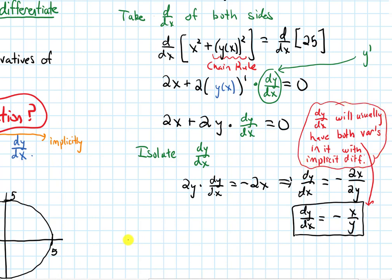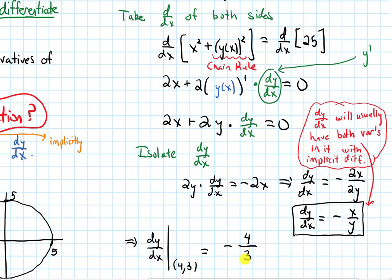So if I write down my derivative dy/dx evaluated at the point (4, 3): my x-coordinate is 4, so I plug in 4 for x. My y-coordinate is 3, so I plug that in. I get negative 4/3 — the same answer I got using Method 1.